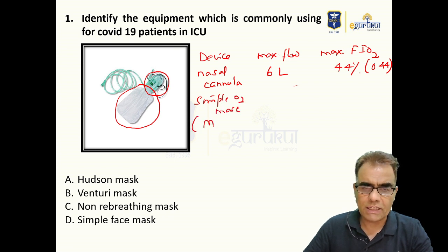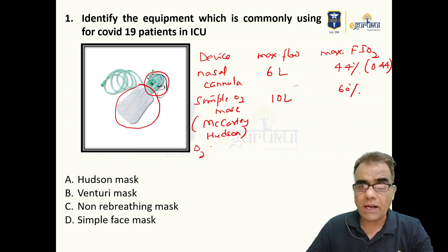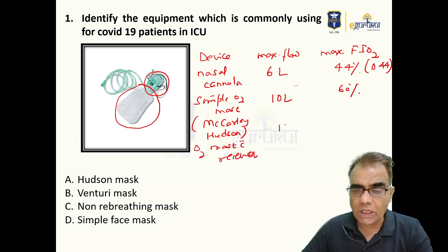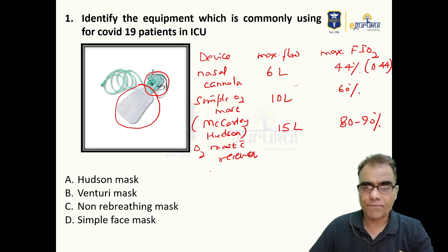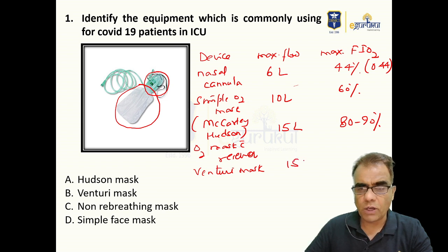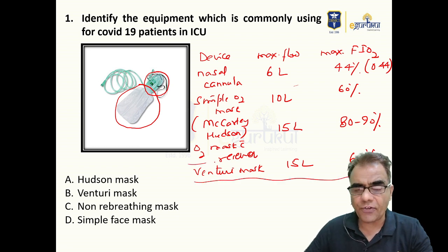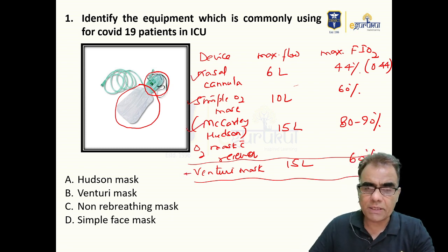For simple oxygen mask — also called McCartney mask or Hudson mask — maximum flow is 10L and maximum oxygen expected is 60%. If you add a reservoir bag to make an oxygen mask with reservoir, you can use up to 15L and maximum oxygen is around 80–90%. For Venturi mask, maximum flow is 15L and maximum FiO2 is 60%.